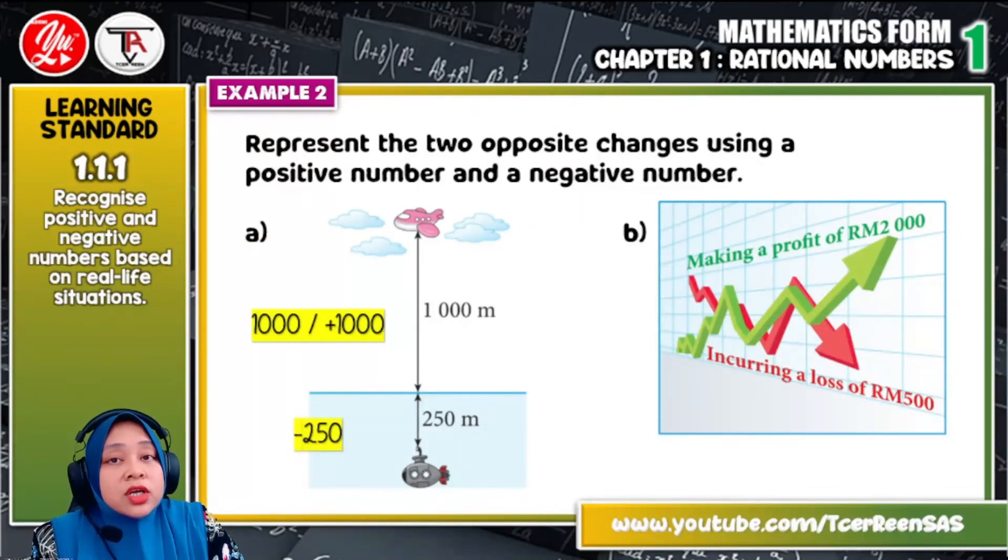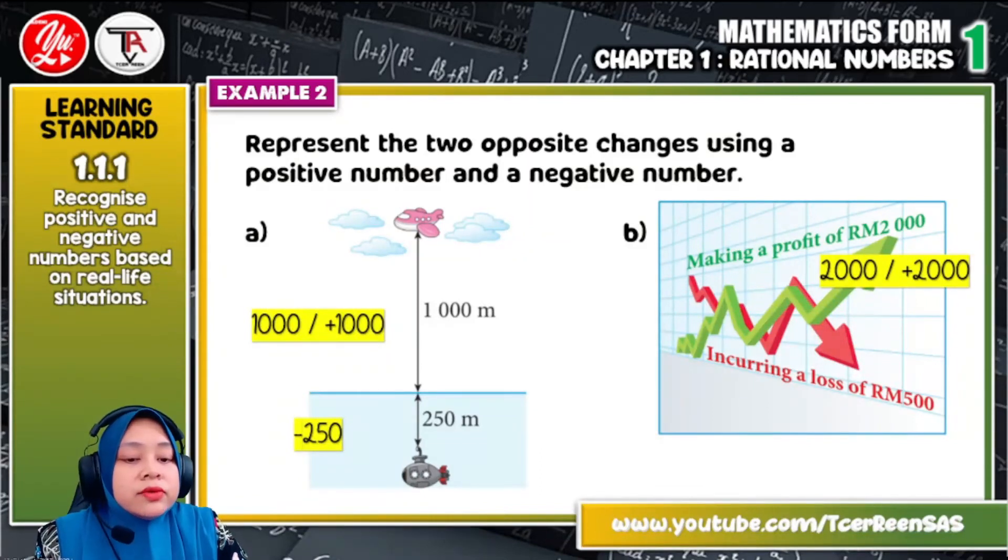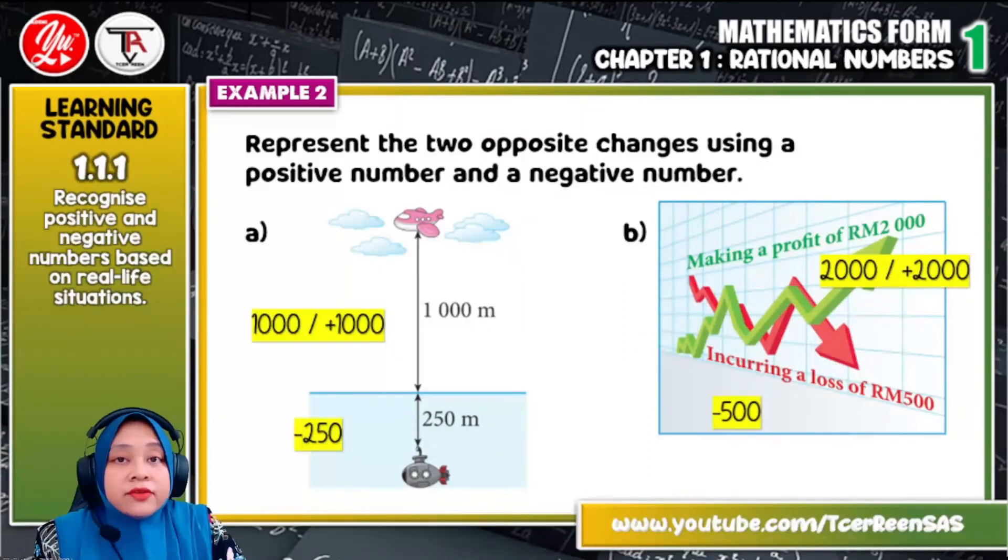Okay, question B, making a profit of 2,000 means that it is increasing 2,000 ringgit. So how to write it is we write it as 2,000 or plus 2,000. And incurring a loss of 500 ringgit, we write it as negative 500.